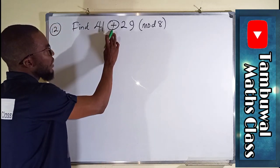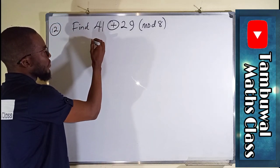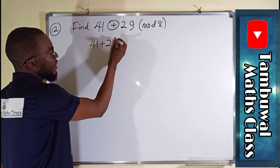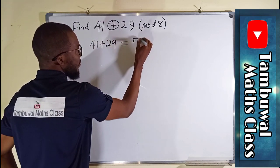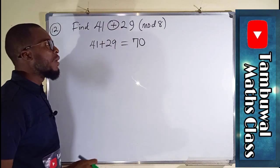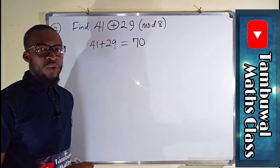So naturally, if we add 41 and 29 together, we are going to obtain 70. But what is this 70 in mode 8? It means how many bundles of 8 are present here.